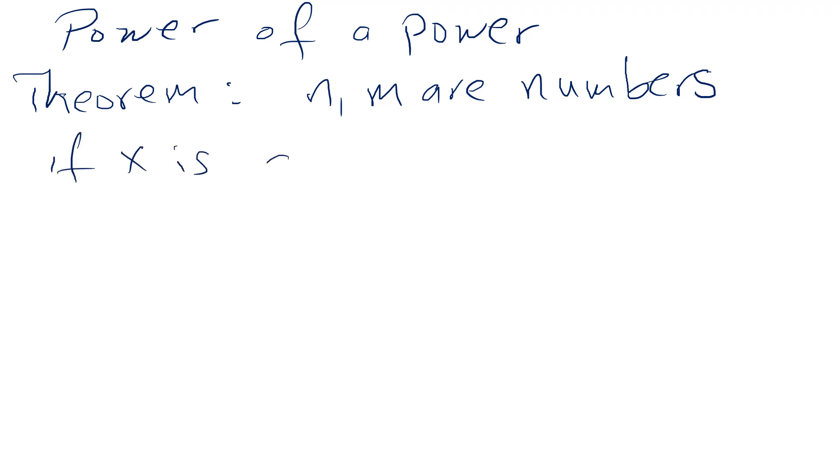The next thing to talk about is what is a power to a power. After multiplying and dividing, now what is a power to a power? Is there a theorem for that? The theorem says if you have n and m are numbers and if x is a number, then x to the power n, all to the power m, is just going to be x to the power n times m.